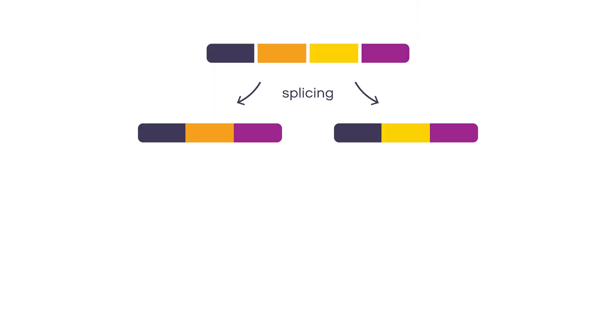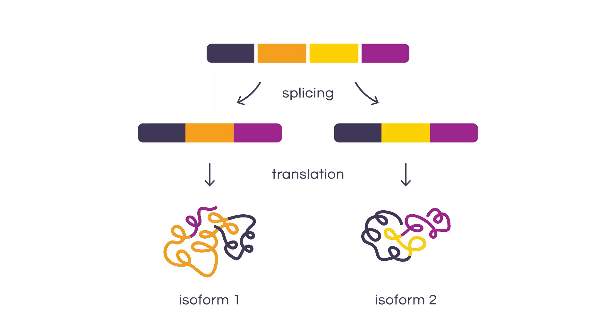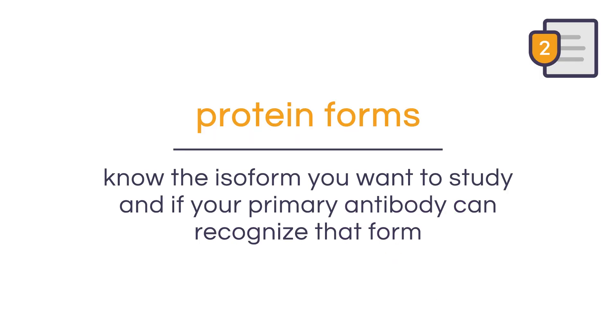First, let's talk about protein forms. A lot of proteins undergo alternative splicing and are therefore found with different isoforms. You need to make sure you know which one of those isoforms you want to study, and that your primary antibody is capable of recognizing that particular isoform.